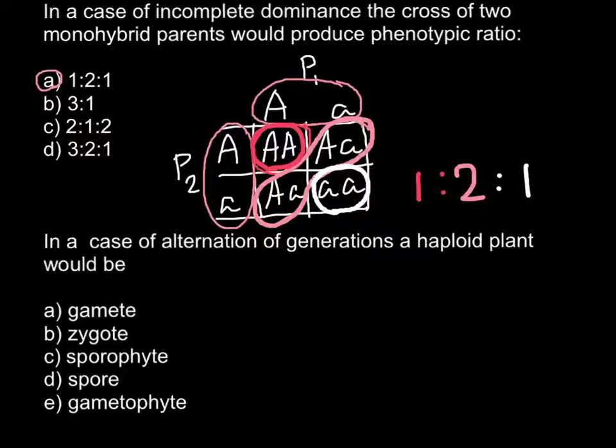So zygote is just an egg that is fertilized by pollen, and sporophyte is the diploid organism when we have alternations of generation.